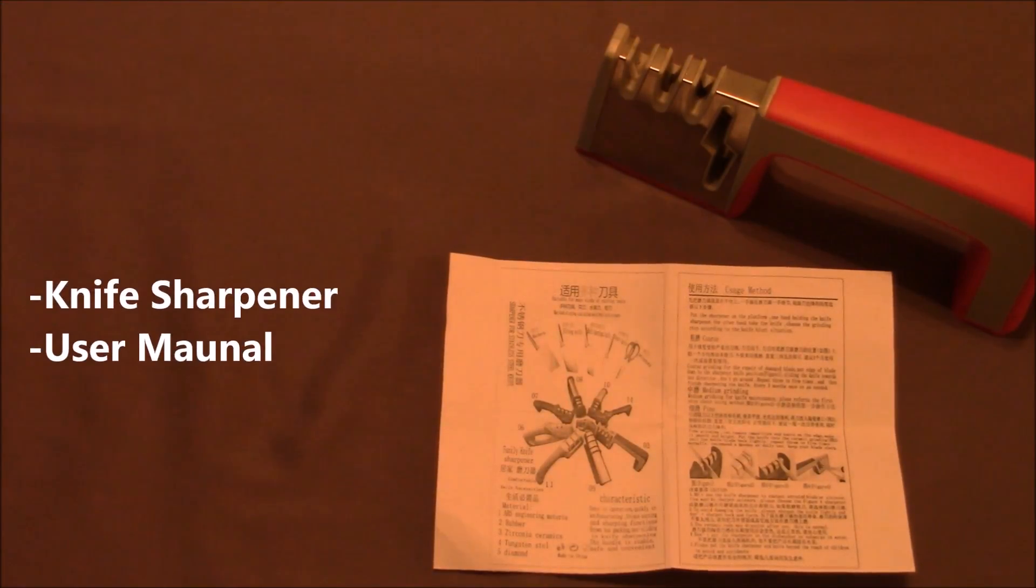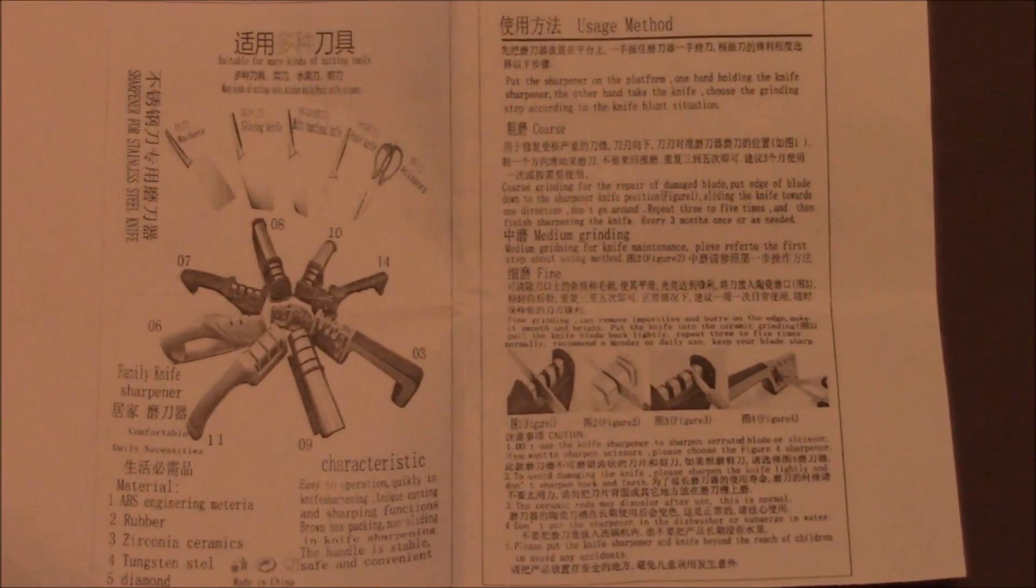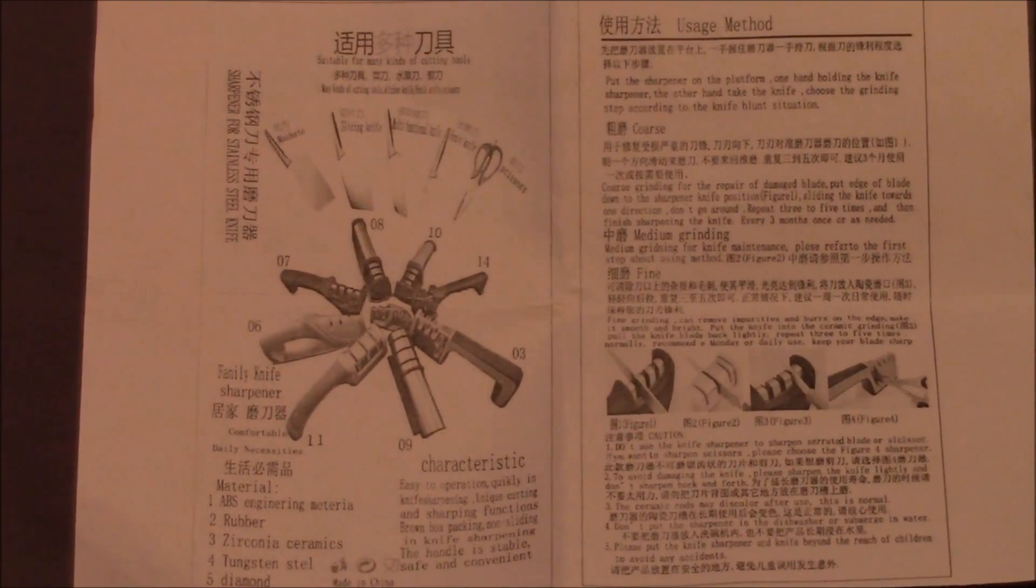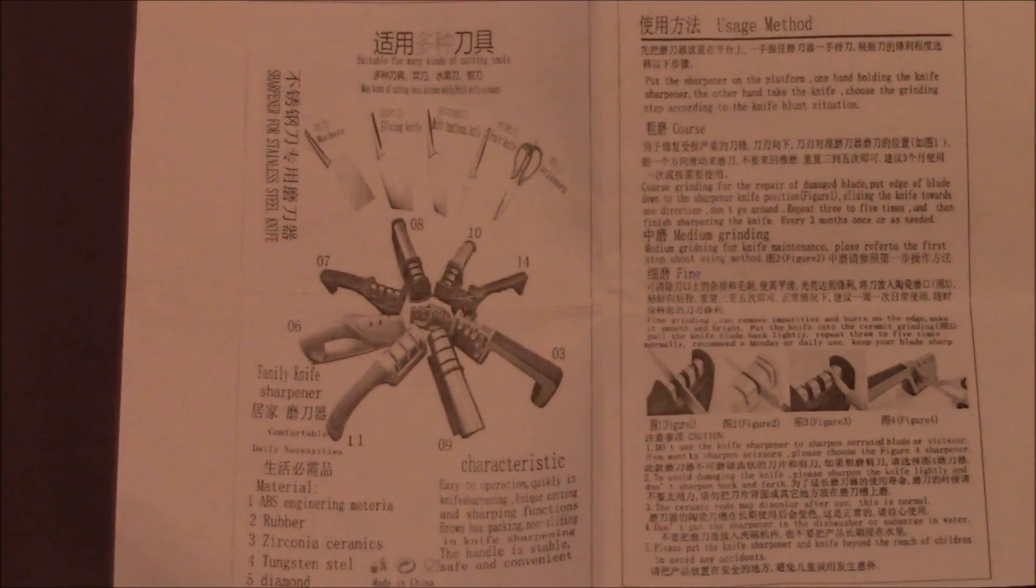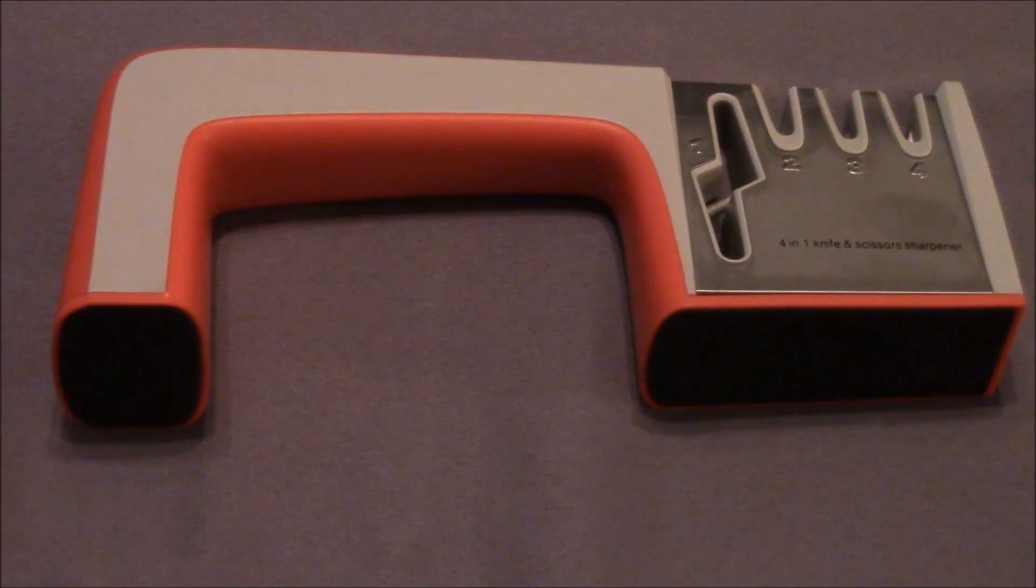Inside the box, you get the knife sharpener and the user's manual, and let's take a closer look at this user's manual. And now moving on to the 4-in-1 knife and scissor sharpener.